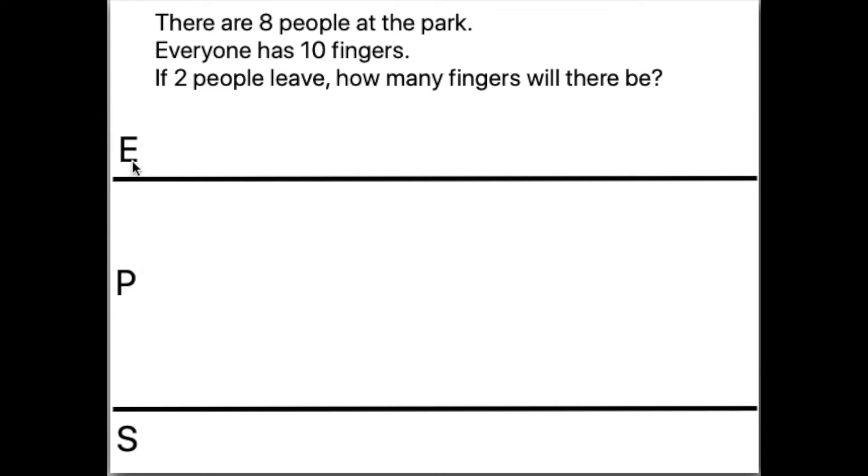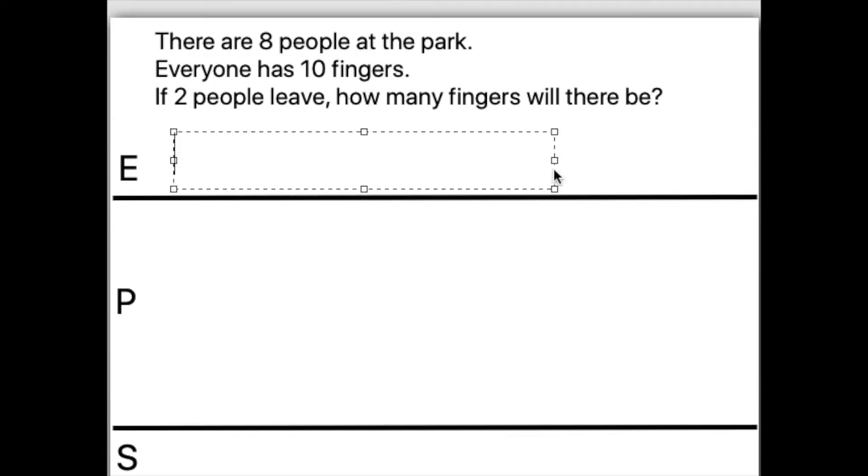Whenever we solve, we have to have our EPS to show our thinking. It says that there are eight people at the park and everyone has ten fingers. We practiced that last week. If there are eight people, then there are 80 fingers. If two people leave, how many fingers will there be? If people are leaving, I'm gonna subtract or take away. The number will get smaller. And two people have 20 fingers. We're gonna figure out what it equals.